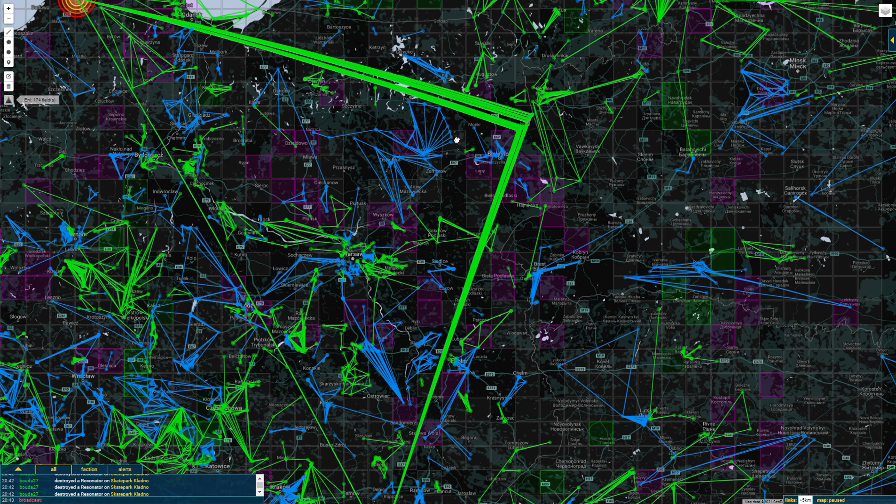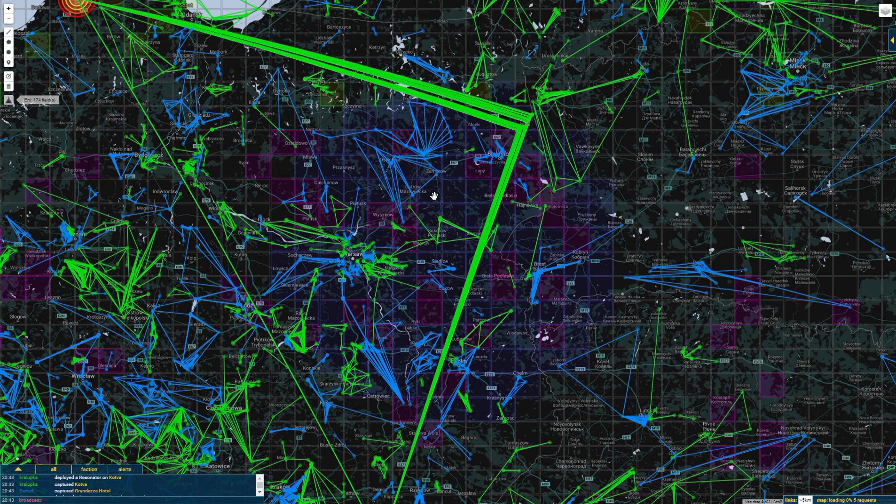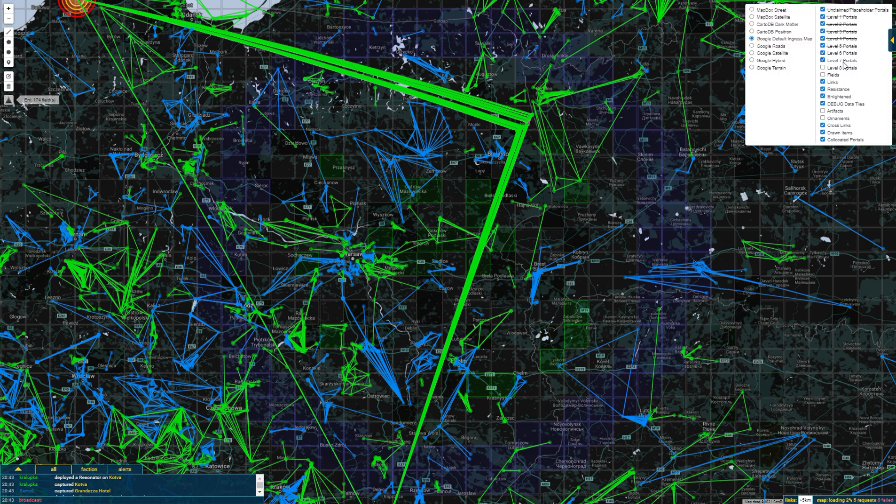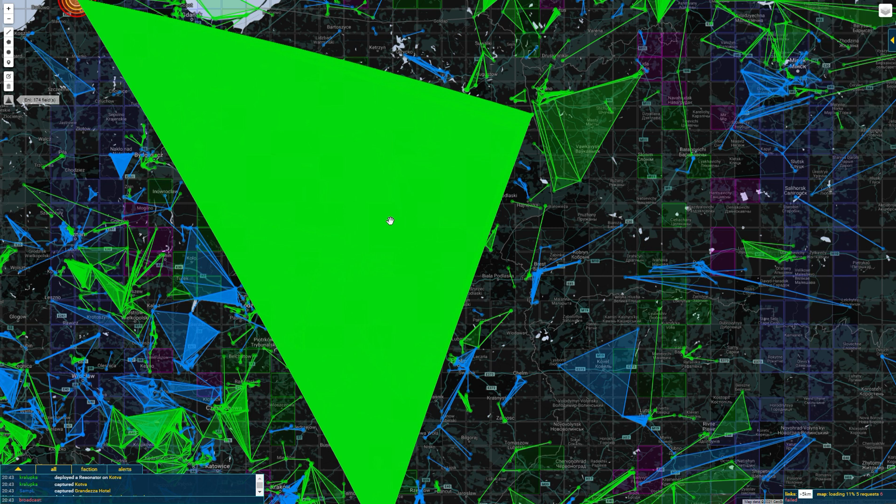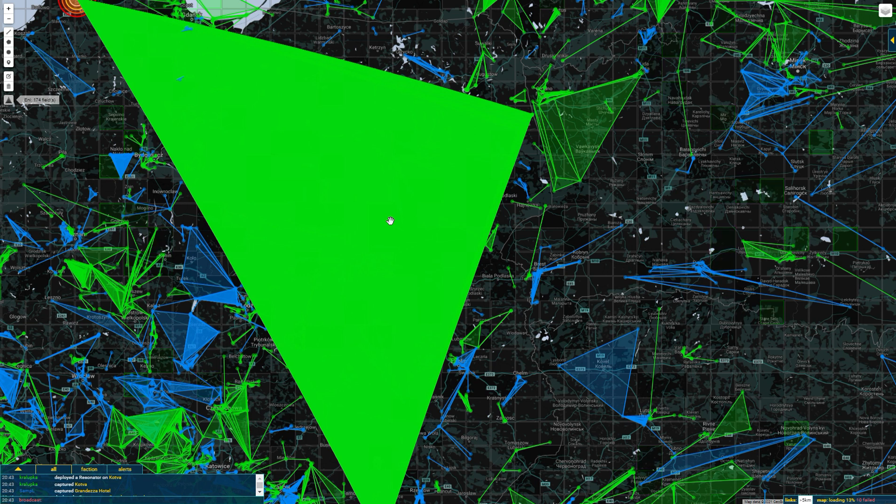174 fields here. There's enough MU here to about double the global Enlightened MU score. Right now, you are looking at 50% of all Enlightened MU in the entire world. 33% of all fields captured by either faction are right here in this view.